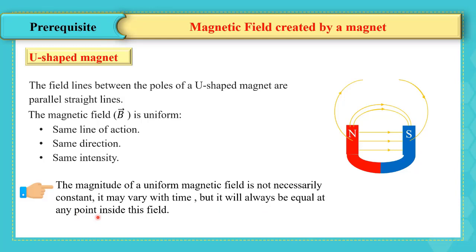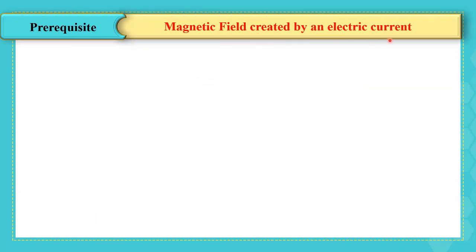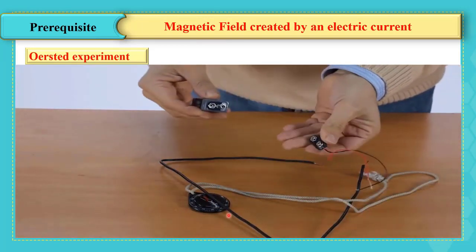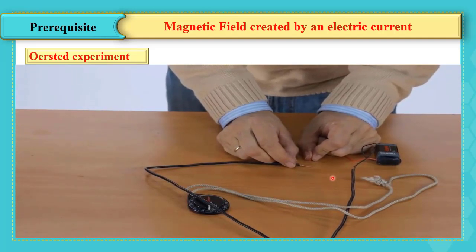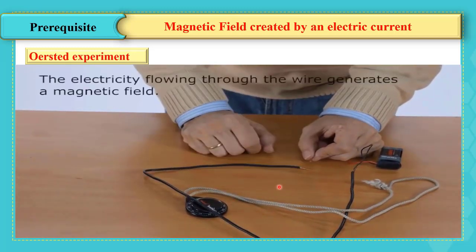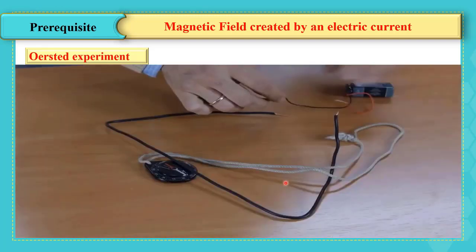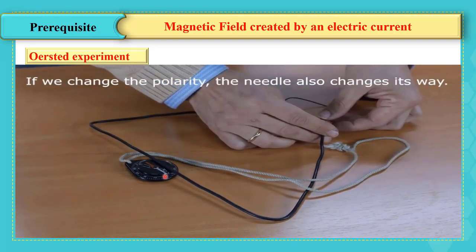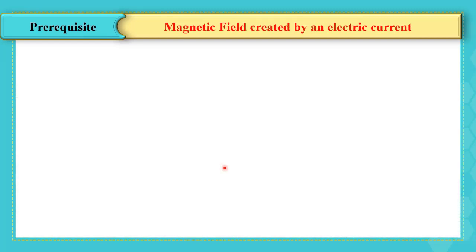To show that the magnetic field can be created by an electric current, let's look at Oersted's experiment. An electric wire is placed above a compass, parallel to it. We connect the wire to the battery. When the circuit is closed, we observe that the needle deviates in a certain direction. We can deduce that the current traversing the wire generates a magnetic field. Note that when we reverse the poles of the battery, the needle changes its direction. This experiment shows that the magnetic field can be created by an electric current.